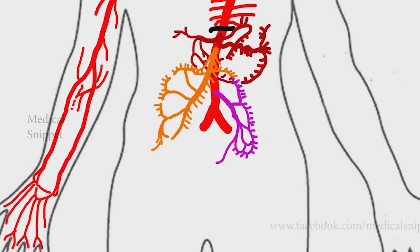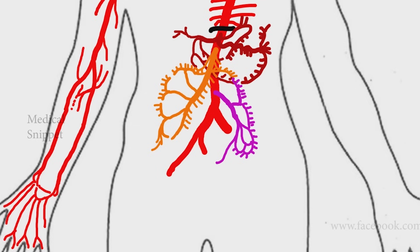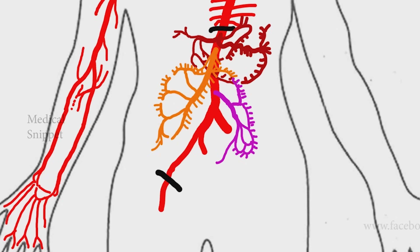The median sacral artery is a small single posterior branch of the distal abdominal aorta. The common iliac artery divides into the external and internal iliac arteries. The external iliac artery passes beneath the inguinal ligament and becomes the common femoral artery. The external iliac artery gives rise to the inferior epigastric and deep circumflex iliac arteries, supplying blood to the muscles and skin of the lower abdominal wall.